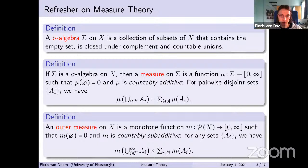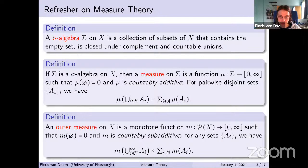Given a sigma algebra, we can define a measure on it — a function that assigns a value to each set in the sigma algebra, valued in the non-negative extended reals, such that the empty set has measure zero and the measure is countably additive: if I have a sequence of disjoint sets, the measure of the union is the sum of the individual measures. An outer measure is similar but defined on all subsets of X — on the full power set. It also sends the empty set to zero, is monotone, and is countably sub-additive, meaning the measure of a union is bounded above by the sum of individual outer measures.